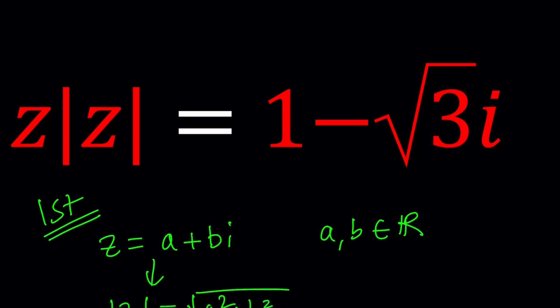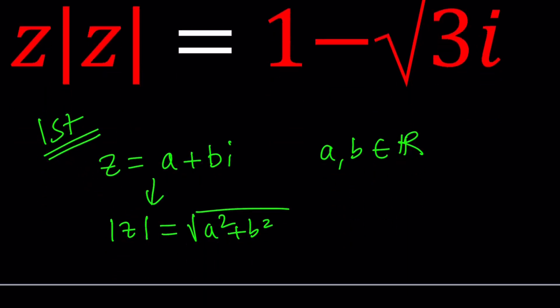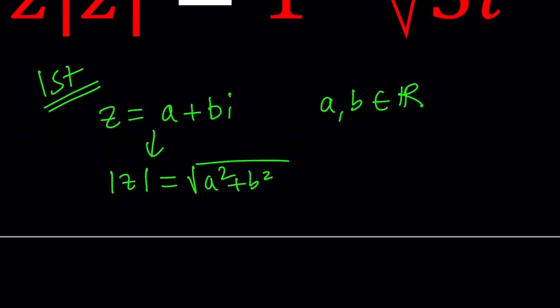One equation, two unknowns. Let's go. We're going to multiply Z by absolute value of Z. So A plus BI, multiply by the square root of A squared plus B squared. And that equals 1 minus root 3I. Great.